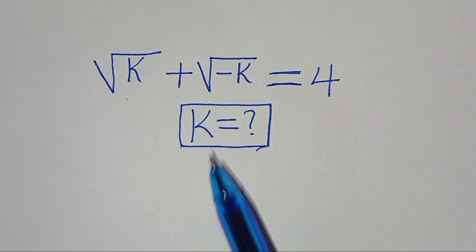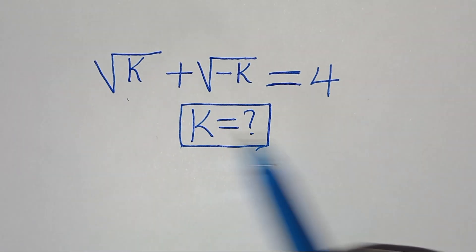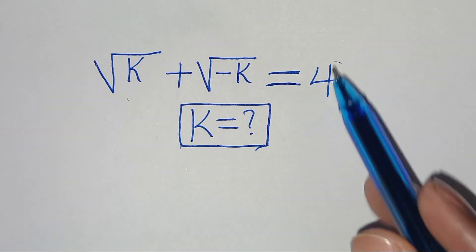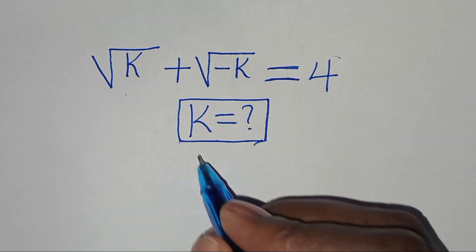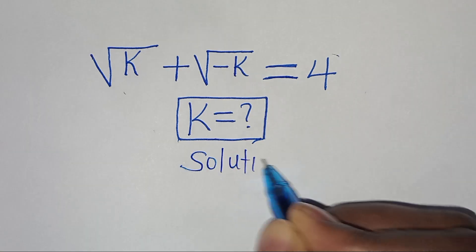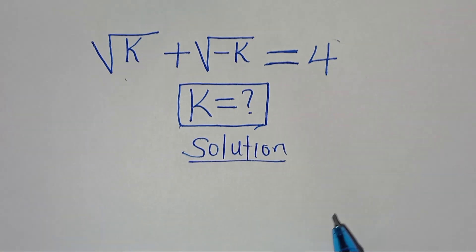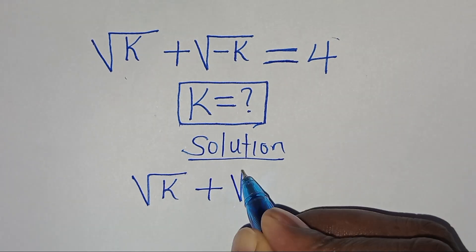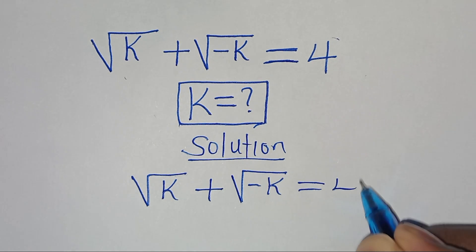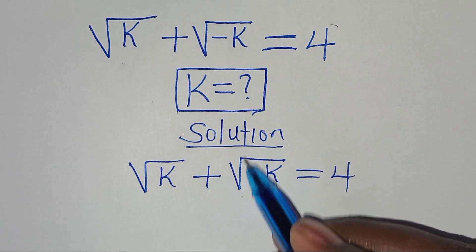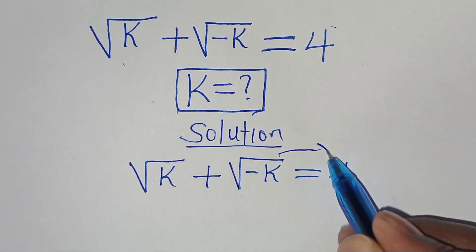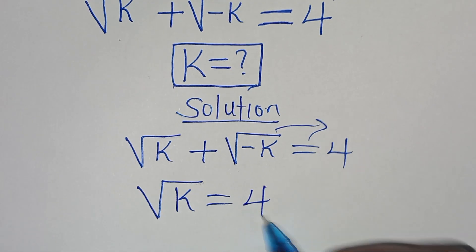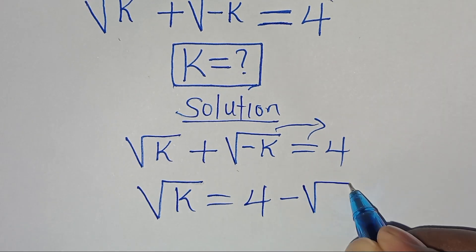Welcome — let's solve this square root math problem: the square root of k plus the square root of minus k equals 4. What is the value of k? The first thing to do is take the square root of minus k to the right-hand side, so that we have the square root of k equal to 4 minus the square root of minus k.